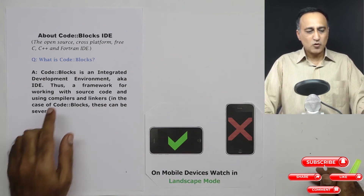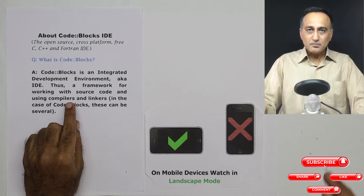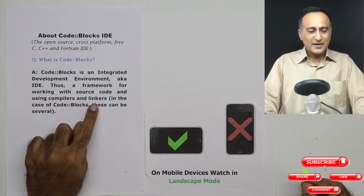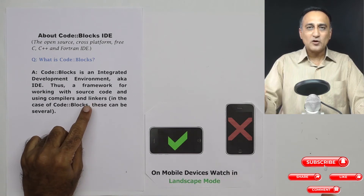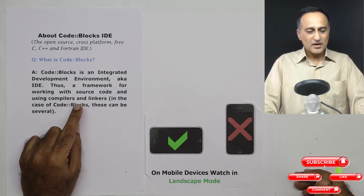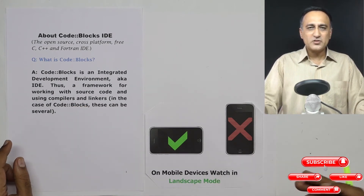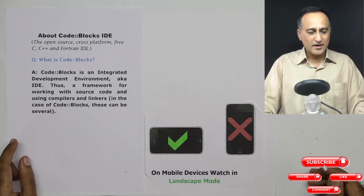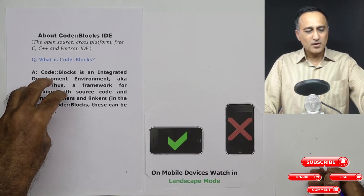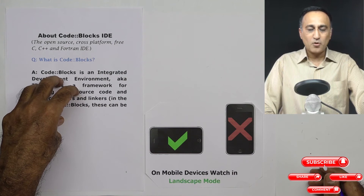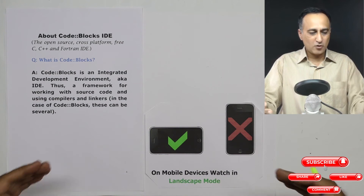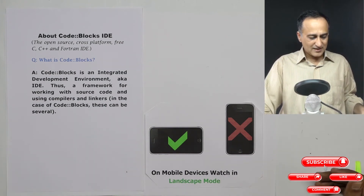Code::Blocks on its own doesn't have its own compiler or linker. It uses compilers and linkers from other open source softwares, like GCC by the GNU group. It also uses the GDB debugger. So Code::Blocks is simply a framework which provides a place for all these other softwares to reside.